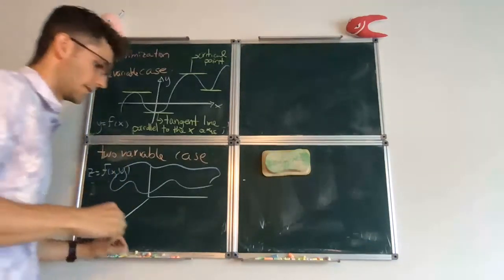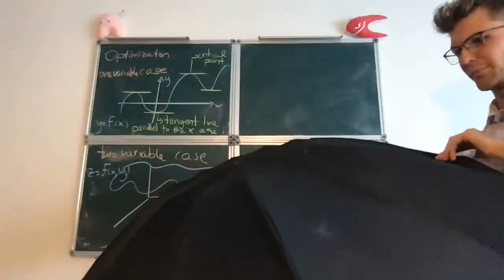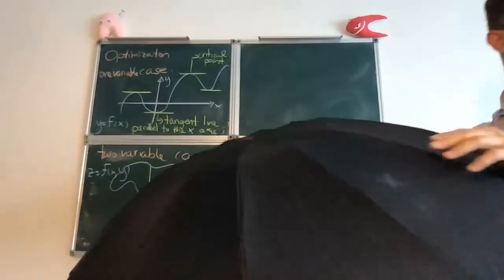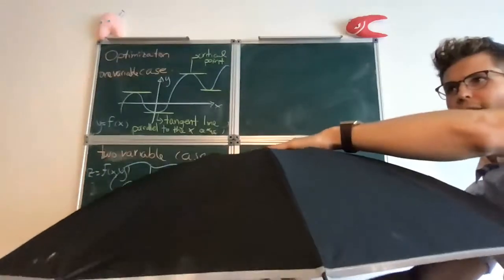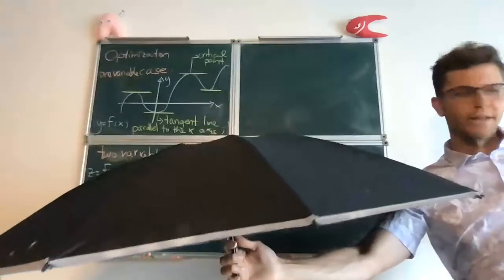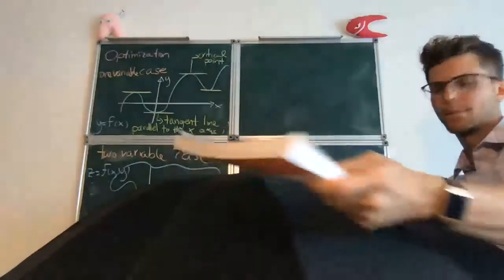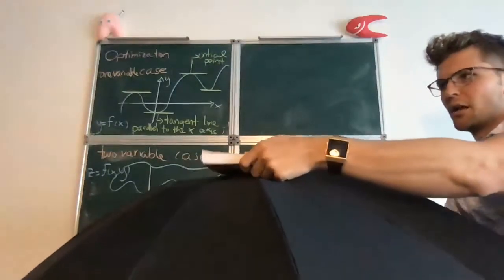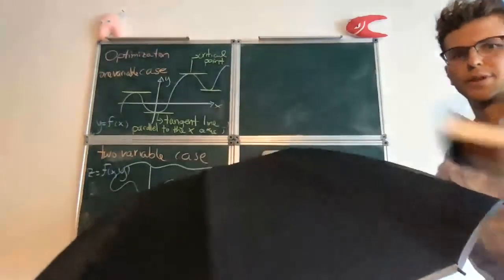And so, again, the model case for a surface for us is the umbrella. Basically, a critical point would be one where at the top of the umbrella, instead of the line being parallel to the x-axis, you would have the tangent plane being parallel to the floor, to the xy-plane. So if you think of this as a tangent plane, then the critical point is characterized by the tangent plane being parallel to the floor.